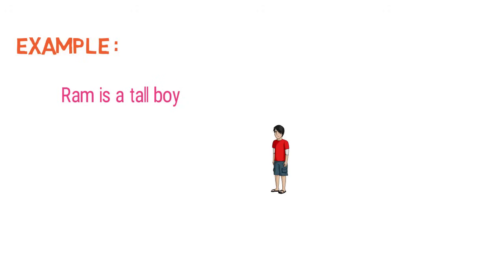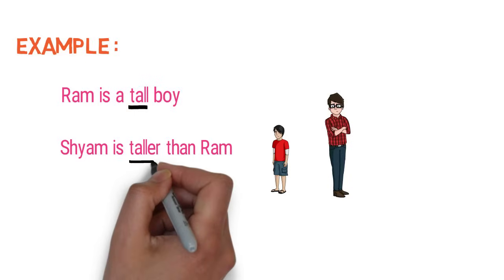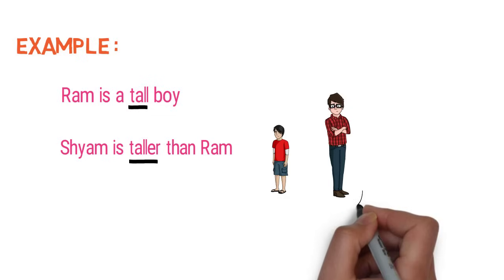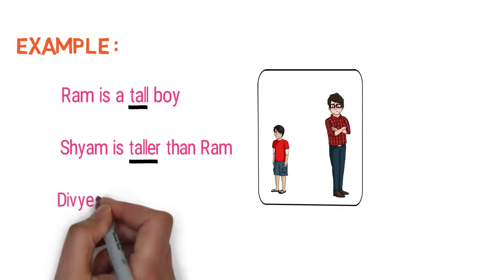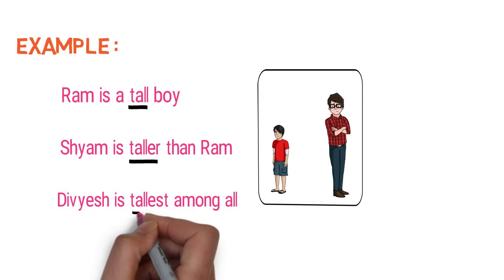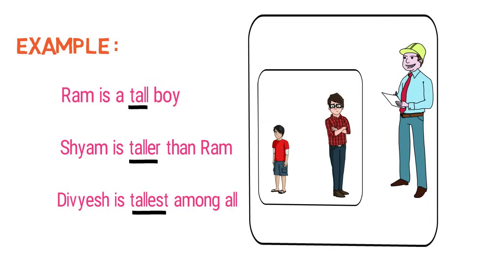Let me give you an example to make these degrees clear. Ram is a tall boy — here tall is an adjective and we are just describing Ram, not comparing him with anyone. So it is a positive degree. Shyam is taller than Ram — here taller is an adjective and we are comparing 2 persons' heights, Ram's and Shyam's. So it is a comparative degree. Divyash is tallest among all — here tallest is an adjective and we are comparing 3 persons' heights. So it is a superlative degree.